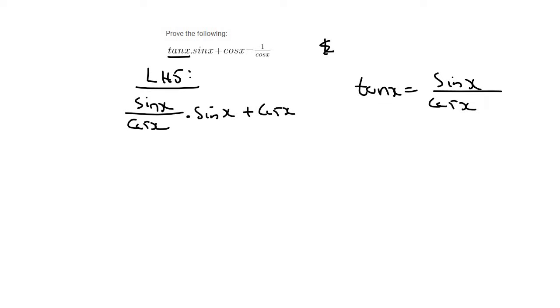And with this, you can think of this as sin x over 1. So that's just going to become sin squared x over cos x plus cos x. We should have an equal sign here and an equal sign here.